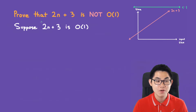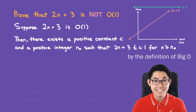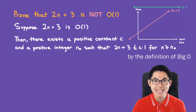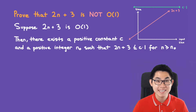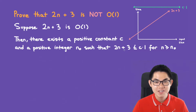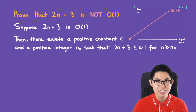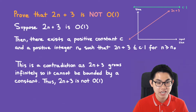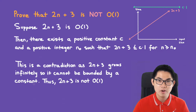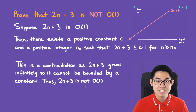Applying this formally: suppose 2n plus 3 is O(1). Then by definition there exists a positive constant c and a positive integer n naught such that 2n plus 3 is less than or equal to c times 1 for all n greater than or equal to n naught. But c times 1 is just a constant, while 2n plus 3 is a linear function — a linear function cannot be bounded by a constant. This is a contradiction, since 2n plus 3 grows infinitely. Therefore 2n plus 3 is NOT O(1).